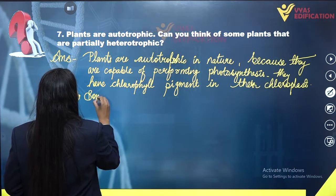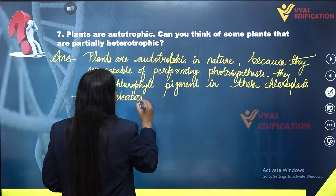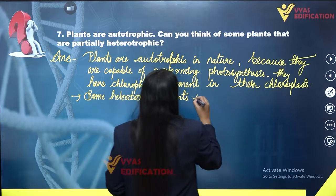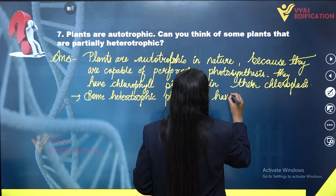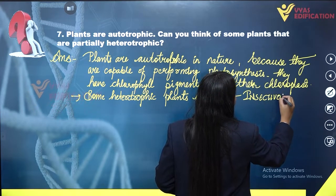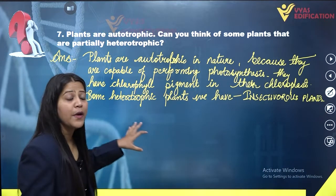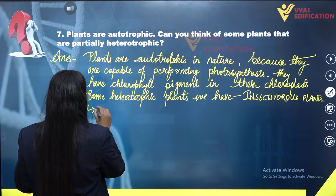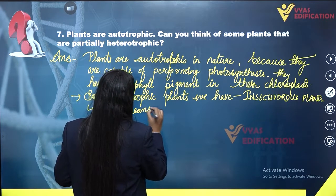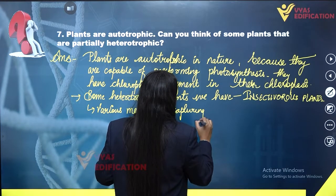But we also have some heterotrophic plants — that is, insectivorous plants. They have various means of capturing insects.